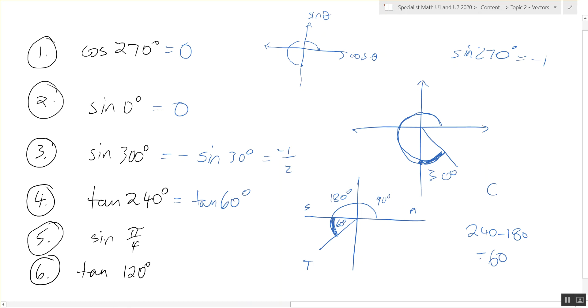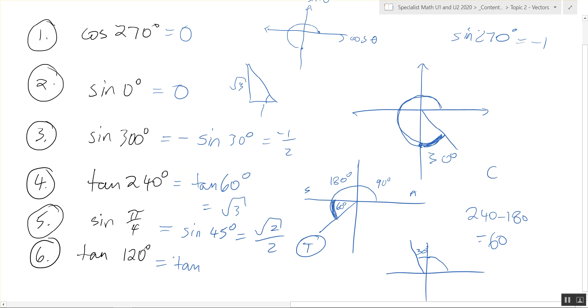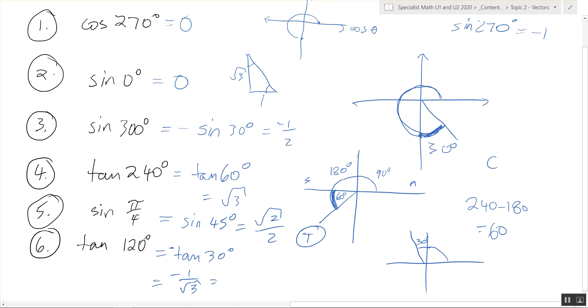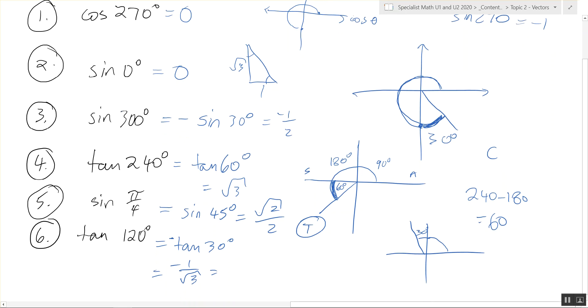It's tan 240. Because it's in the third quadrant it's positive. So then you had special triangle again. Tan is opposite over adjacent. Negative tan 30. Does that make sense? And if we look back to the special triangle 1 over square root 3. Negative, sorry 1 over square root 3. We have to get the square root 3 off the bottom so it becomes negative square root 3 over 3. Very good.